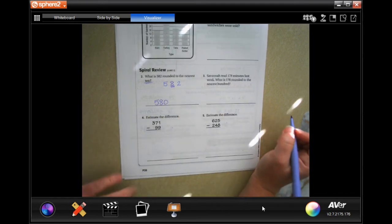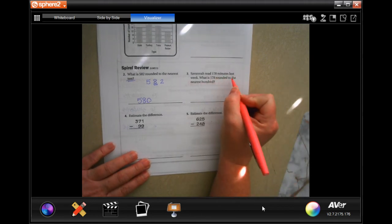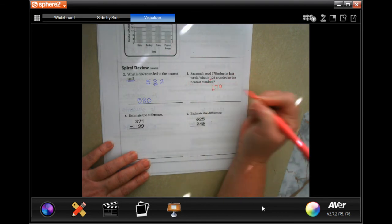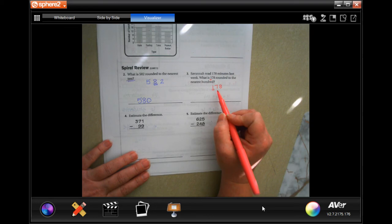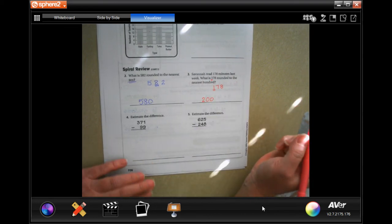Savannah read 178 minutes last week. What is 178 rounded to the nearest hundred? One seven eight rounded to the nearest hundred. Same thing as before. If the next number is five or bigger it's going to round up. Seven is bigger than five. We're going to make that one into a two and still put in zeros for the other two numbers. 200.